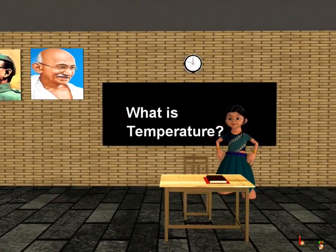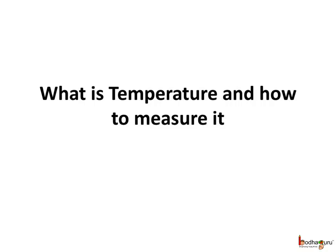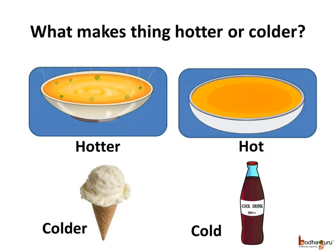Good morning children. Today we shall learn about temperature and how to measure the temperature. We often say the soup is hot or the ice cream is very cold. But have you ever wondered what makes the soup hot or the ice cream cold? Some objects are hotter than the other, like the soup on the left side is hotter than the soup on the right side. Some objects are colder than the other, like this ice cream is colder than this cold drink.